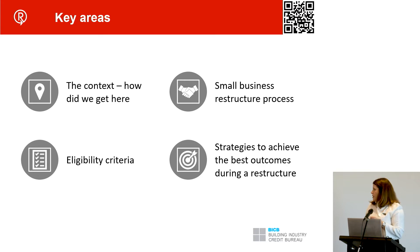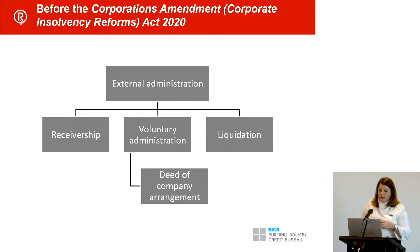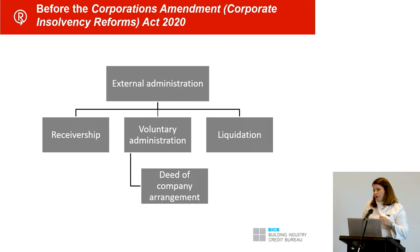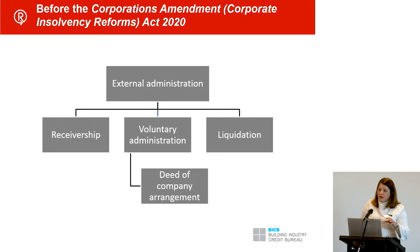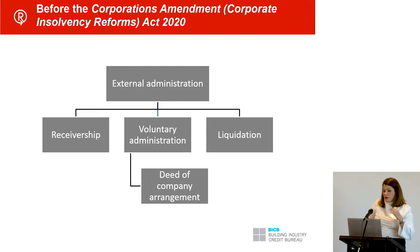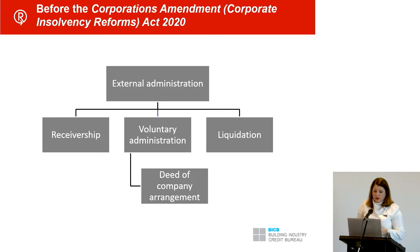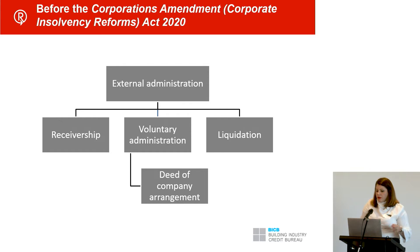We're here today to talk about small business restructuring. It's important to understand how this came about and the context. It came about due to COVID, but it was an amendment made to the Corporations Act and was formalized in June 2021. Prior to small business restructuring, there was a lot of criticism around this piece of legislation when it first came out in draft format. It put forward a change to the traditional regime with respect to external administration — traditionally your receivership, voluntary administration, liquidation, and deed of company arrangements.